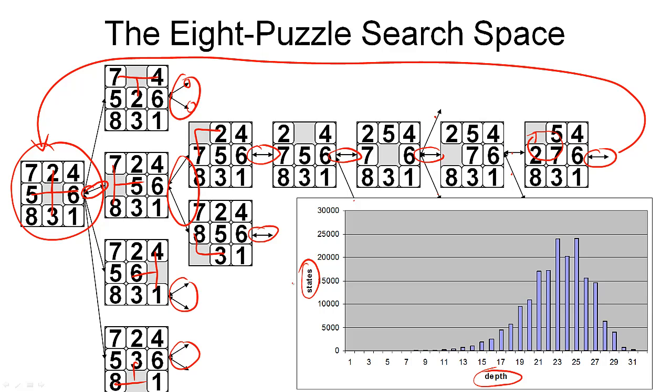Here, we have the number of different states that are at that depth. Altogether, there's about 180,000 different states in the search space. And we can see that most of the states are actually at around depth 24.